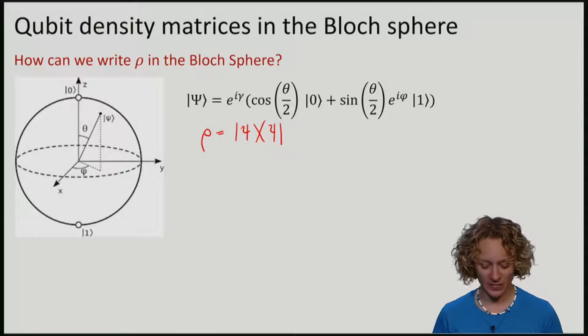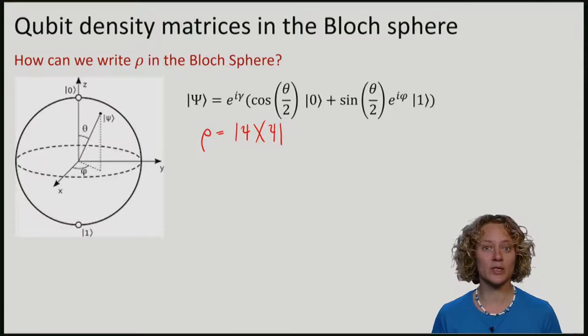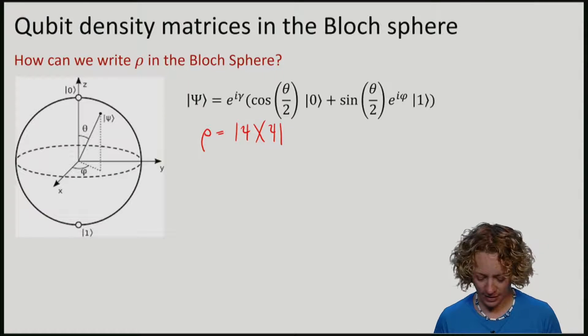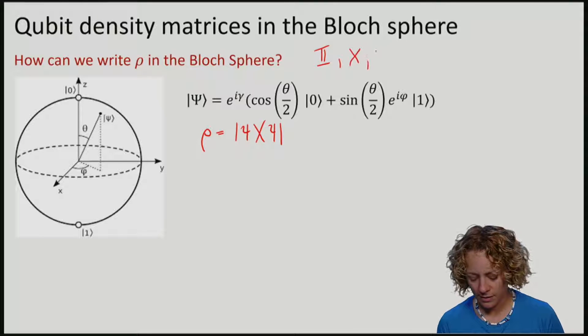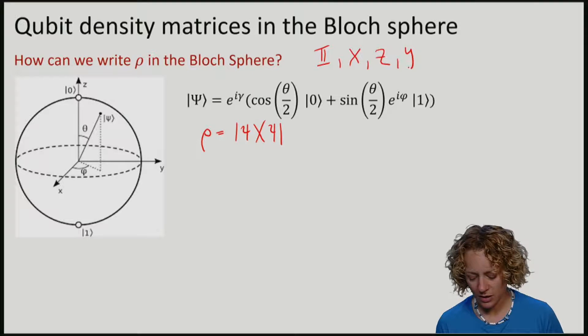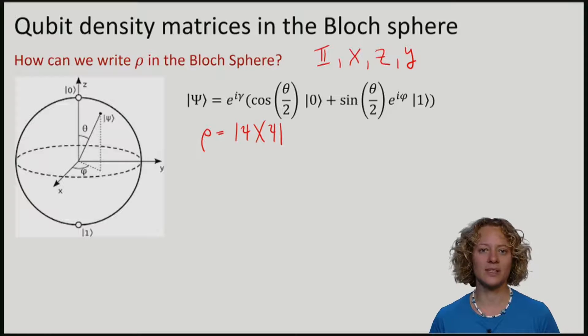For a qubit, our rho is a 2 by 2 matrix. And one basis for the 2 by 2 matrices is given by the identity matrix X, Z and Y, where these are the Pauli matrices.